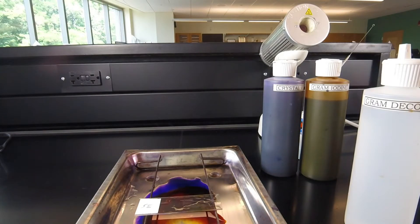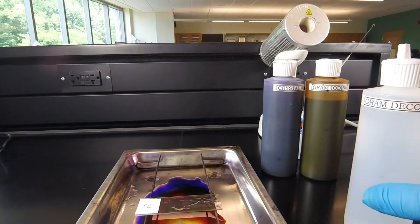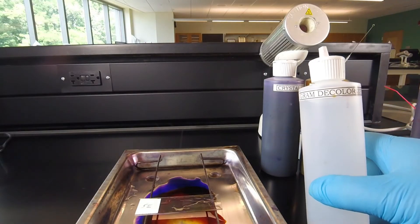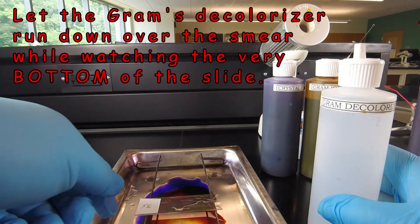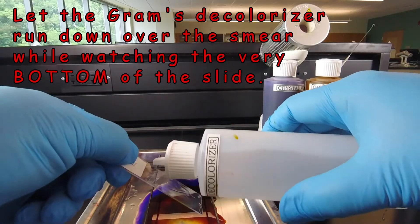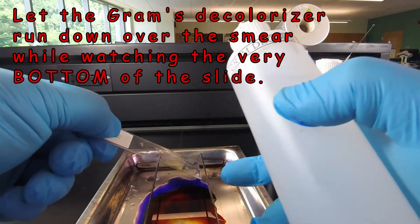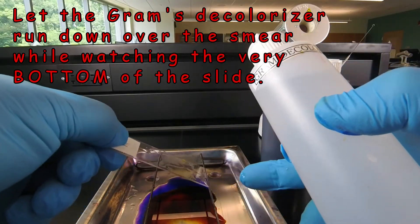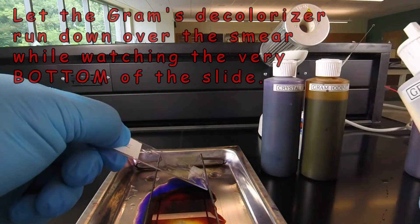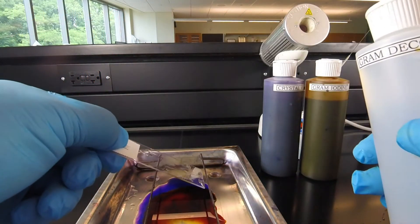The decolorization step is our next step, and this is the most critical step during the Gram stain. You have to do this very carefully because you can over-decolorize or under-decolorize. We're going to use Gram's decolorizer, a mixture of ethyl alcohol and acetone. We're going to direct the decolorizer down over the slide while going back and forth with the decolorizer bottle, letting it run down over the entire smear. As we do this, we're going to be watching the bottom of the slide, not the smear, but the bottom, watching the purple come off from the crystal violet iodine complex.